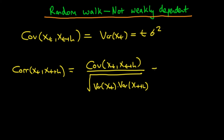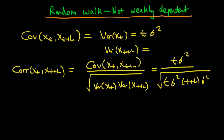If we substitute in for each of these things, we have that the numerator is just t times sigma squared, and then the denominator becomes t times sigma squared times t plus h sigma squared. For the variance of xt plus h, we're basically just increasing t to t plus h, so it just becomes t plus h times sigma squared.